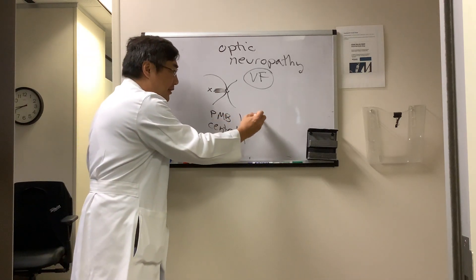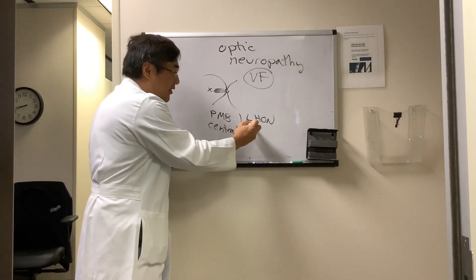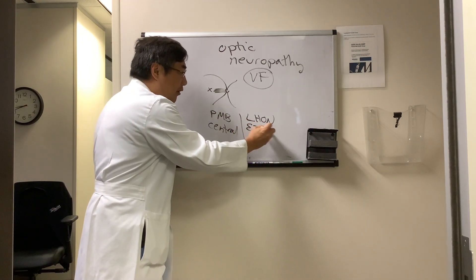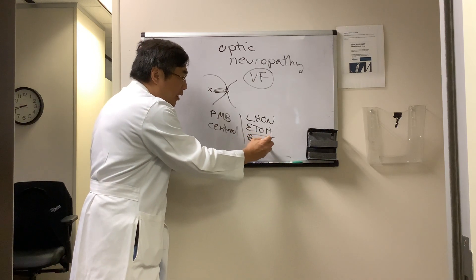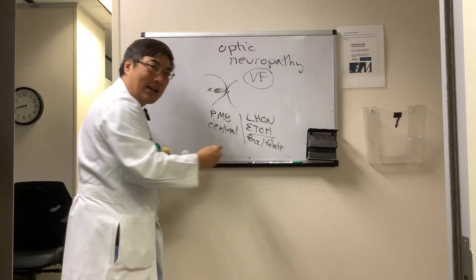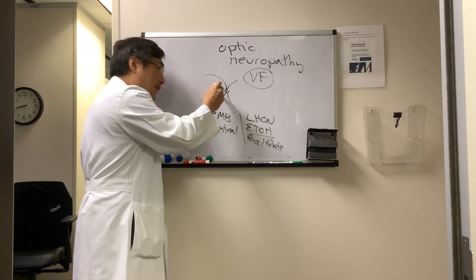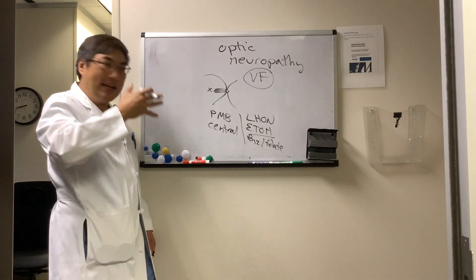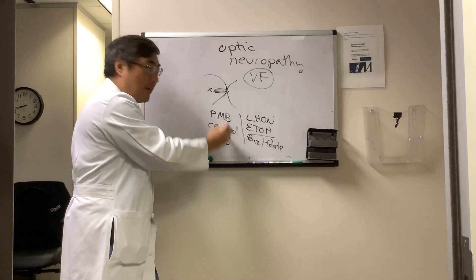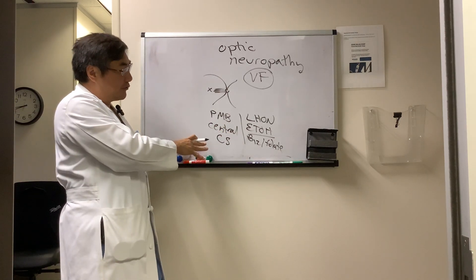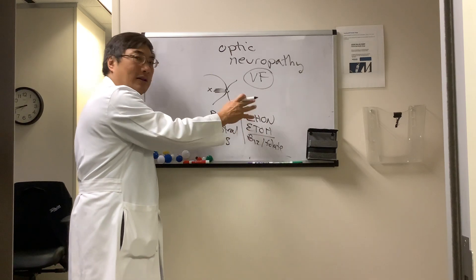Mitochondrial diseases like Leber hereditary optic neuropathy, or toxins like alcohol-related B12 or folate deficiency, or methanol exposure, produce toxic effects on the papillomacular bundle that take your central vision away right away. So these cause central scotomas. Bilateral central scotoma — you should be thinking toxic, nutritional, and Leber.